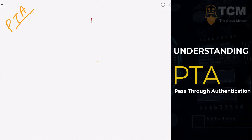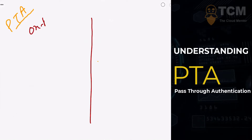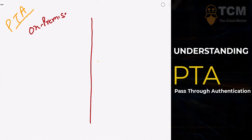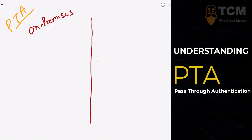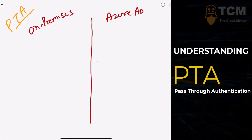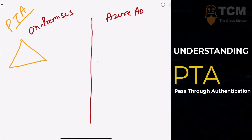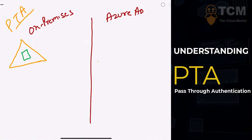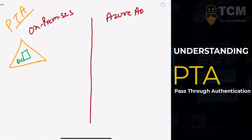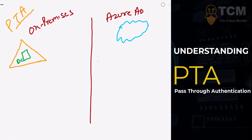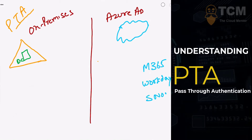I'm going to use the same diagram here, draw a line here and call the area on the left-hand side as on-premises, and the one on the right-hand side as Azure Active Directory. As always, on your premises you've got a domain, and inside your domain you've got a domain controller — that's your DC. Azure Active Directory is represented by the cloud, and then you've got several SaaS-based applications like M365, Workday, or ServiceNow as examples.